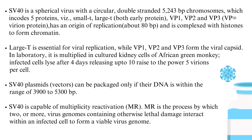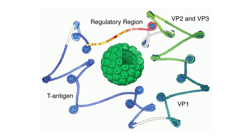Multiplicity reactivation is the process by which two or more virus genomes containing otherwise lethal damage interact within an infected cell to form a viable virus genome. The diagrammatic representation of the SV40 genome shows that the T antigen is essential for viral replication.